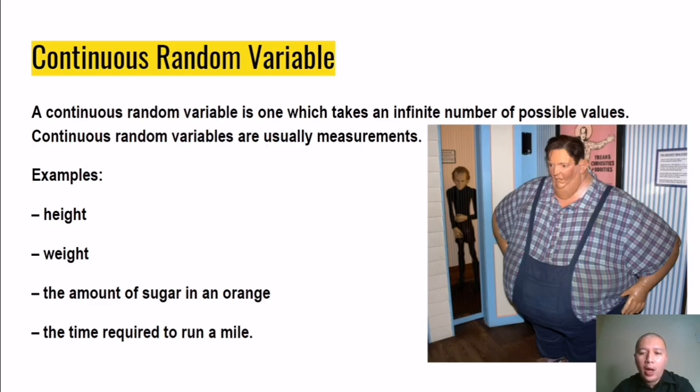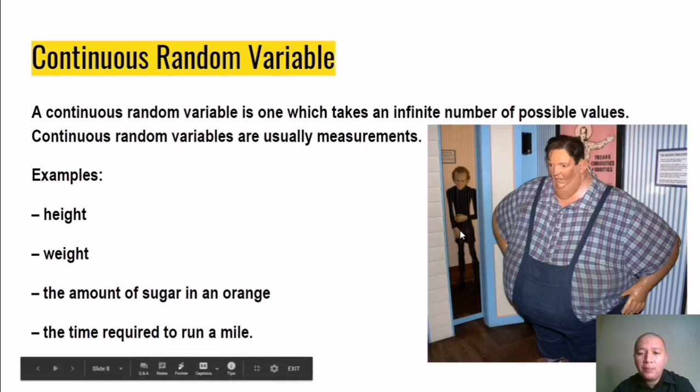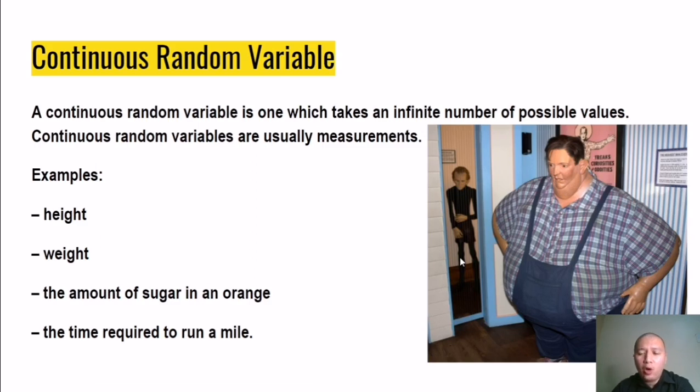For example, when it comes to height, we all know that there are averages. For Filipinos, the average height would be 5'5 to 5'7 for males. And that would be varying if you are in the United States, where the average height would be around 5'11 to 6 feet up. In our example picture here, we can see the fattest man alive at a specific year - I believe this picture was taken from the wax museum - and right beside him is a picture of the thinnest man. When you talk of weight, there must be averages, ideal weights, and so on.